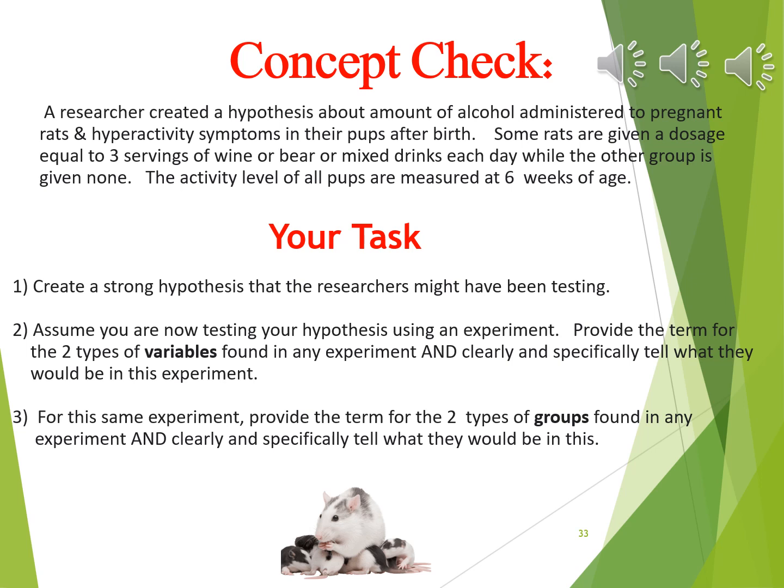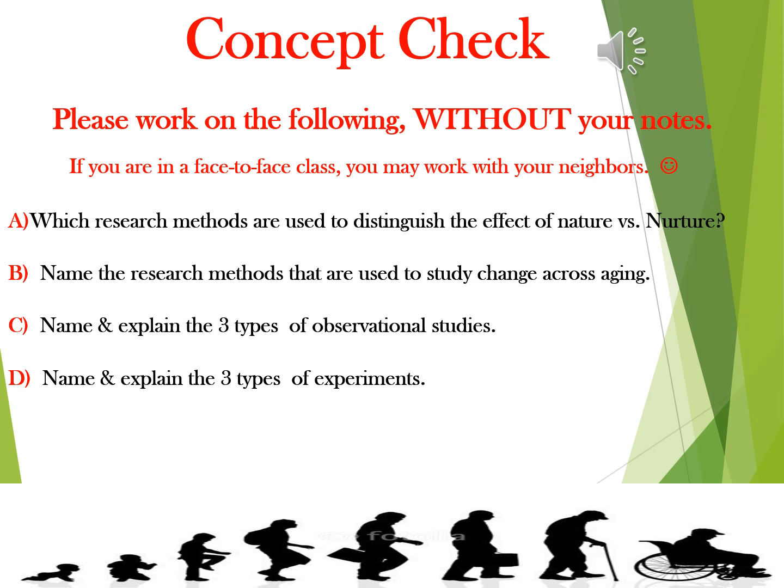To summarize the methods: for distinguishing nature from nurture, we use kinship or family, twin, and adoption studies. For studying change over time, we use longitudinal and cross-sectional studies — the textbook calls the latter sequential. Three types of observational studies are participant, laboratory, and field — with participant being far less common. Three types of experiments are laboratory, field, and naturalistic.